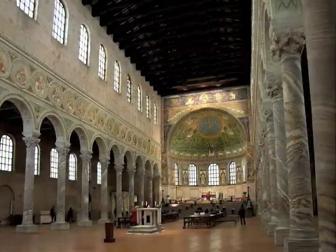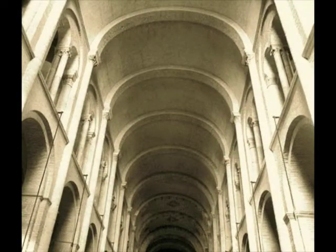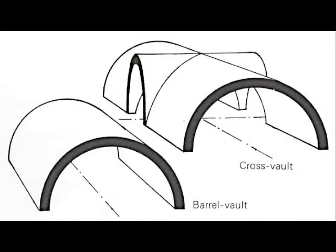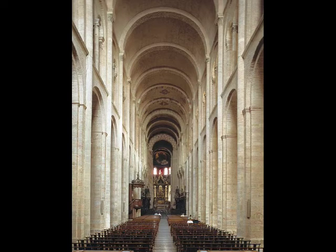A typical early Christian basilica has a wooden ceiling, but a wooden ceiling can burn easily. So the typical Romanesque pilgrimage church has a stone vault that is more fireproof. The vault covering the nave is a barrel vault; the aisles are covered with cross vaults. Both barrel and cross vaults were used by earlier Roman builders between the first and fourth centuries. Roman vaults were made of concrete, but Romanesque vaults were constructed of stone or brick. Stone vaults require strong supports, like thick walls and sturdy arches on piers.